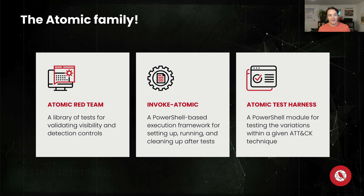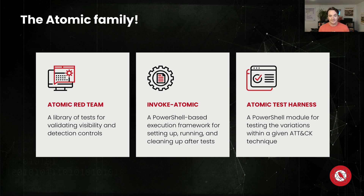It is not just Atomic Red Team — we've got other tools that can help you use it. Invoke Atomic is probably one of the best and most useful ones. Invoke Atomic is a PowerShell-based execution framework for Atomic Red Team. It allows you to list tests, get details about those tests, select a given test, see the prerequisites, execute that test, and then run the cleanup command. You can do all of this in an automated fashion — you just have to install Invoke Atomic on PowerShell.